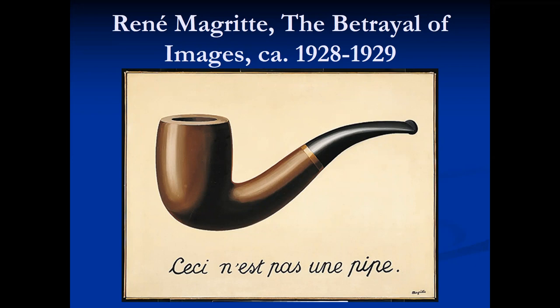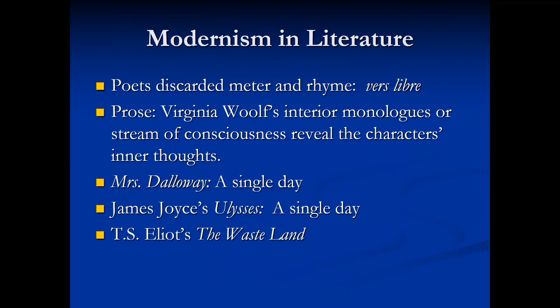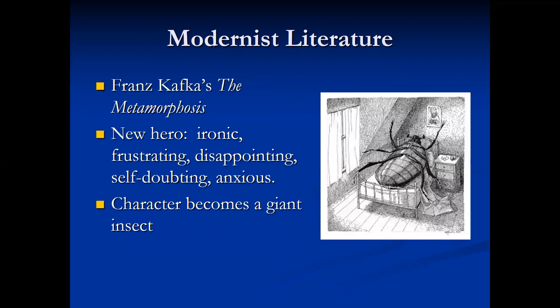Literature of the modernist era reflected both the rejection of tradition and the influence of developments in psychology. Poets discarded meter and rhyme, writing in free verse. Virginia Woolf's novel Mrs. Dalloway consists of an interior monologue or stream of consciousness revealing the inner thoughts of the main character Clarissa over the course of a single day. James Joyce uses a similar technique in Ulysses. T.S. Eliot's poem The Wasteland used interior monologues from multiple characters in a disjointed format that incorporates phrases from multiple languages. In Franz Kafka's novella The Metamorphosis, the main character becomes a giant insect, creating a new type of ironic, self-doubting, anxious hero for the modern age.